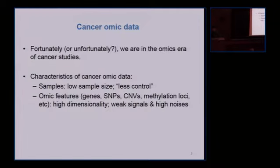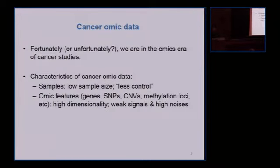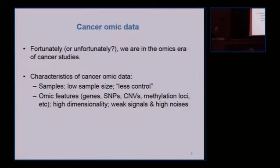Common features for those measurements are: first, we have high dimensionality. If we're talking about genes, that's 20,000 plus; for SNPs, very easily going over a million. And also, for most cancers, we don't have very strong signals — we have a couple of small to moderate signals at most — and that makes the analysis really, really challenging.